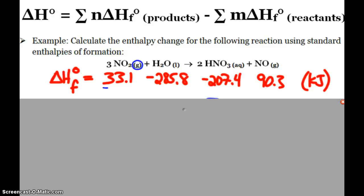Nitrogen dioxide gas is 33.1 and these are all kilojoules per mole. Liquid water, negative 285.8. Aqueous nitric acid, negative 207.4. Nitrogen monoxide gas, 90.3. So now what I have to do is take the sum of those for my products minus the reactants, but I have to also watch my balanced equation. You have to watch the coefficients when we're doing this.